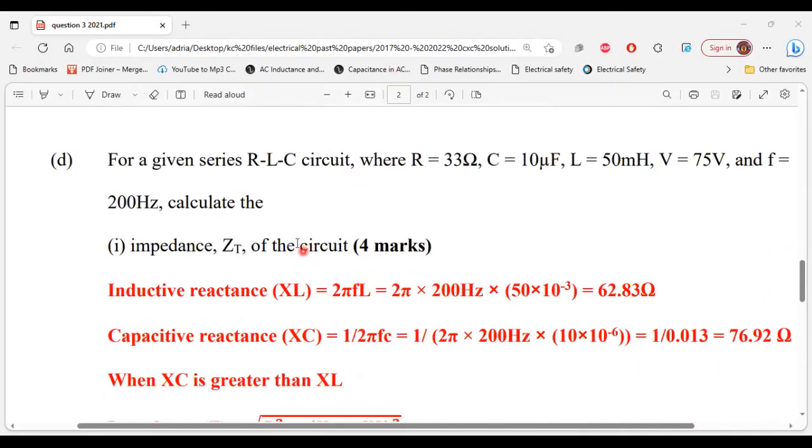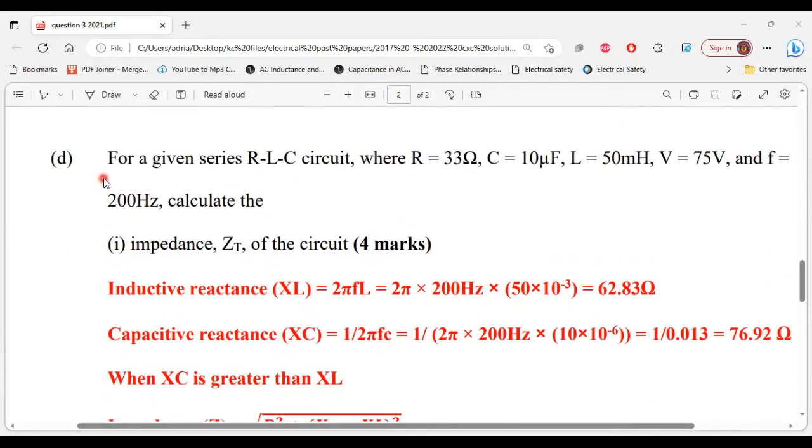All right, so let's move on to part D now. It says for a given series RLC circuit where R = 33Ω, C = 10μF, L = 50mH, V = 75V, and f = 200Hz, calculate the impedance of the circuit. So that's part one of D. Now before we can calculate the impedance, the first thing we have to calculate is the inductive reactance and the capacitive reactance.